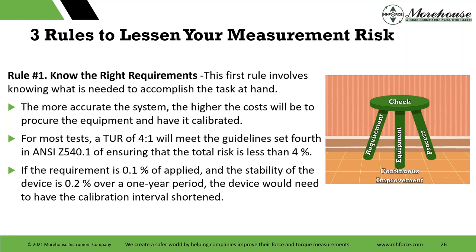Going through rule number one: the more accurate the system, the higher the cost will be to procure the equipment and have it calibrated. There was a fantastic video that talks about what it takes to get to the next decimal place — if today we can read to 0.01, tomorrow we want to be able to resolve 0.001, though that takes a lot more money to improve to that extent. That video is a great one from NIST on that.